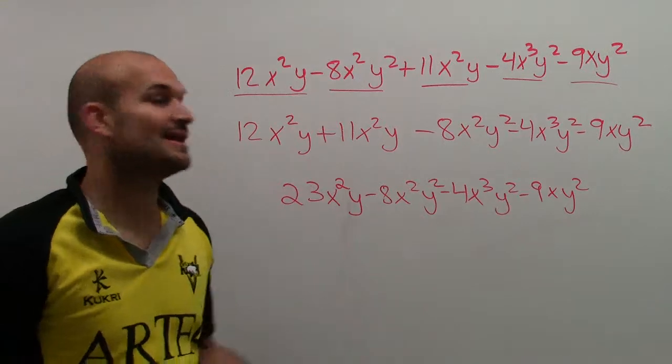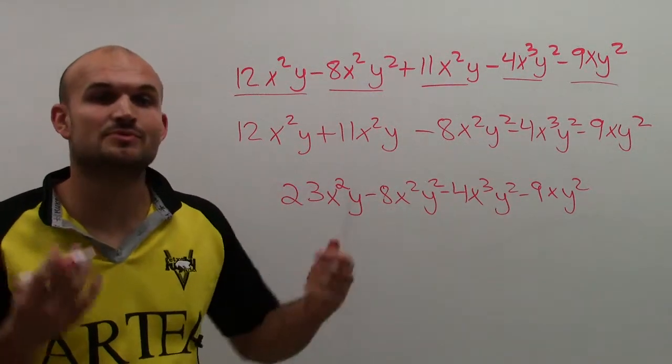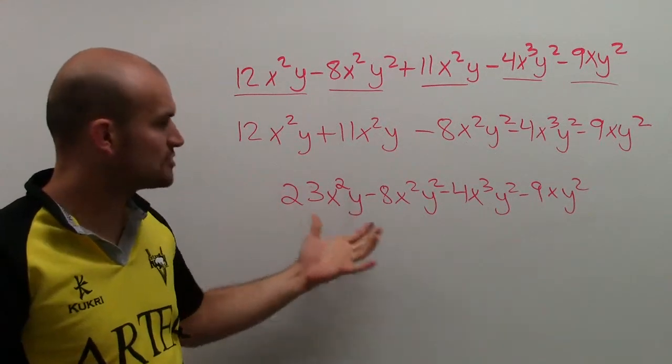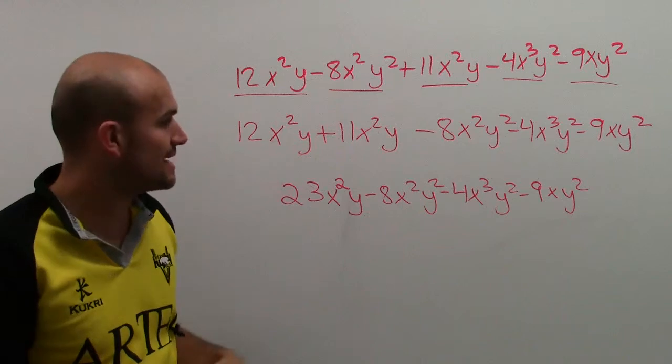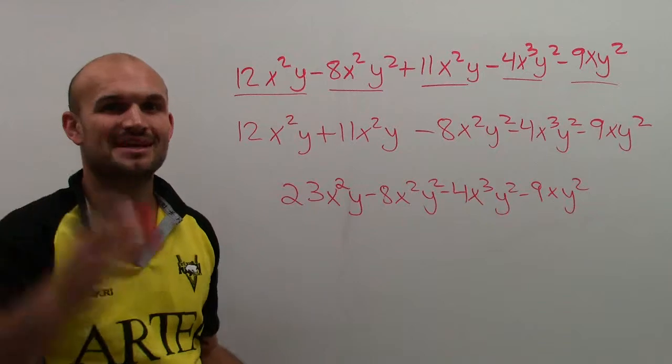So there is going to be our final answer. With our only two terms that we can combine, and remember, when you combine like terms, we're just going to be adding up the coefficients. Your algebraic factors remain exactly the same. And the rest of these, we couldn't do anything with them. So just leave them there. Thanks for watching.